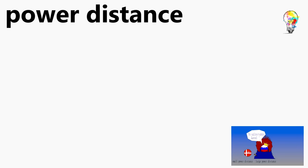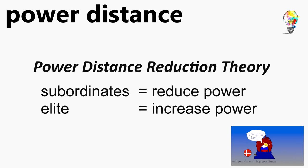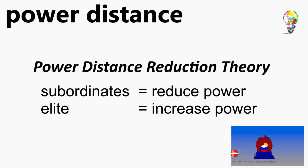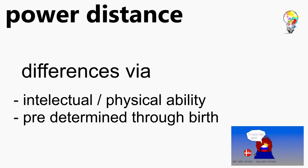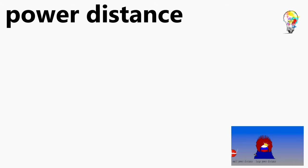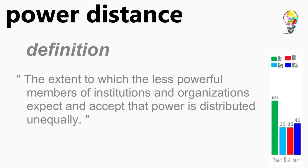The term power distance was first described in the daily power game by Dutch social psychologist Mauk Mulder in the 1960s and refers to interpersonal power differences. According to Mulder's power distance reduction theory, subordinates will try to reduce the power distance while the elite ought to maintain and enlarge it. Hofstede understands it as the level at which both tendencies find equilibrium, as determined by society. Differences occur due to intellectual and physical skills in the group or are predetermined by birth. It is the extent to which the less powerful members of institutions and organizations expect and accept that power is distributed unequally.